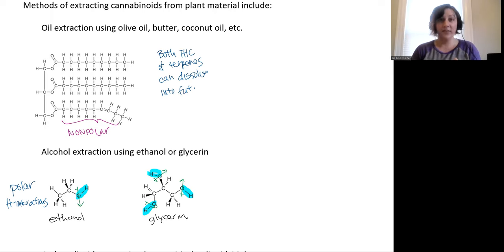And so if we compare these two and the amount of THC that can be extracted into them, we can get a higher concentration of THC in the ethanol than we can the glycerin. And so glycerin tinctures will have lower concentrations of our cannabinoids.